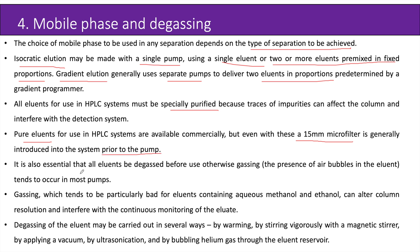It is also essential that all eluents be degassed before use; otherwise, gassing — the presence of air bubbles in the eluent — tends to occur in most pumps. Gassing, which is particularly bad for eluents containing aqueous methanol and ethanol, can alter column resolution and interfere with the continuous monitoring of the eluate. Eluate is the mobile phase containing the separated analyte molecules. Degassing of the eluent may be carried out by warming, by stirring vigorously with a magnetic stirrer, by applying a vacuum, by ultrasonication, or by bubbling helium gas through the eluent reservoir.